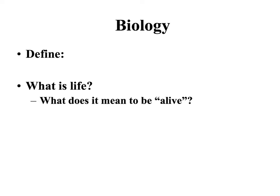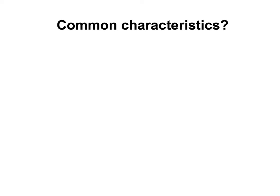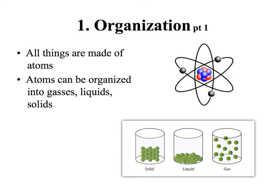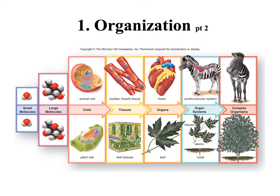Biology is the study of life, so we need to figure out: what is life? What does it mean to be alive? There are six different characteristics that define living organisms. The first one is organization. All organisms are made of atoms, which can be organized into gases, liquids, and solids. We take those atoms and organize them into small molecules, which can be organized into larger molecules. Living things take organization to higher levels than non-living things. Cells take large macromolecules and turn them into structures such as organelles. Cells can be organized into tissues, which work together in organs. Many organs can be put together into an organ system, and several organ systems lead us to complex organisms.